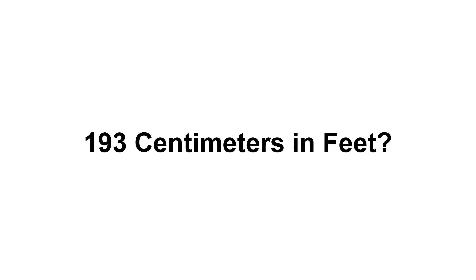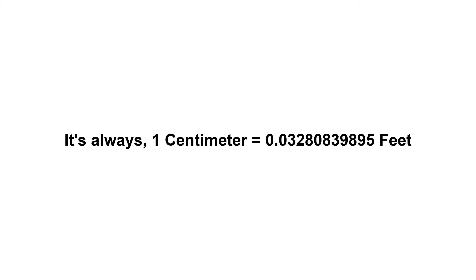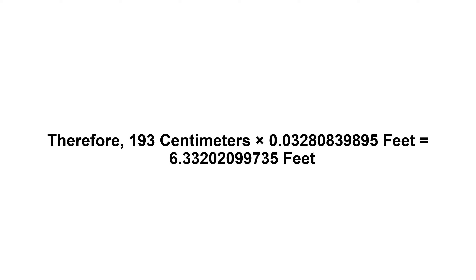193 centimeters in feet. First of all, we need to know the value of one centimeter in feet. One centimeter equals 0.03280839895 feet. Now we have to multiply 0.03280839895 by 193. Therefore, 193 centimeters times 0.03280839895 feet equals...